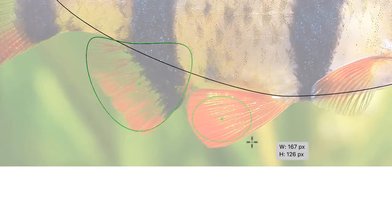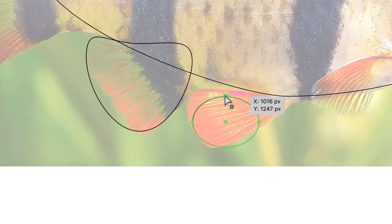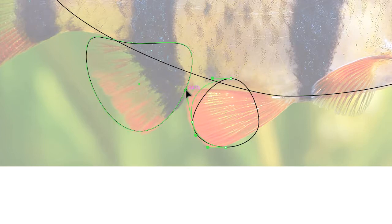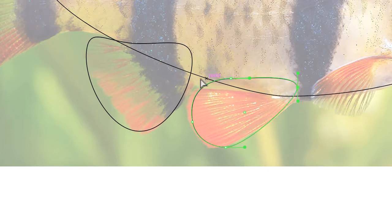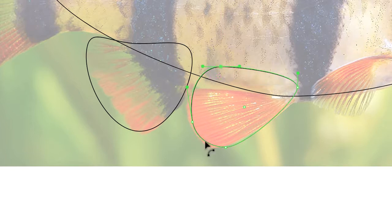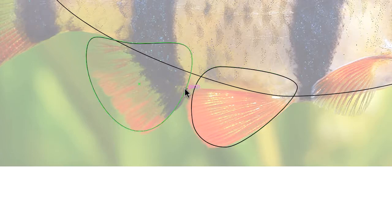Ellipse tool again. Sloppy ellipse again over here. White arrow, the Direct Select tool. I'm going to pull this anchor point up here. On the real fish, these two fins are very, very close together. I'm going to grab this anchor point and pull it up this way. On the real fish, these fins are almost touching. On my stylized drawing, I'm going to have some breathing room between these. There's one, there's the other.